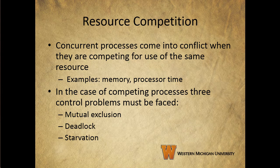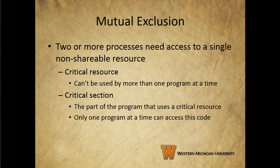In the case of competing processes, we have three control problems: mutual exclusion, deadlock, and starvation. Mutual exclusion is needed when two or more processes need access to a single non-sharable resource. A resource that cannot be used by more than one process at a time is called a critical resource, and the part of a program that uses a critical resource is called the critical section. Only one process at a time can be in its critical section.